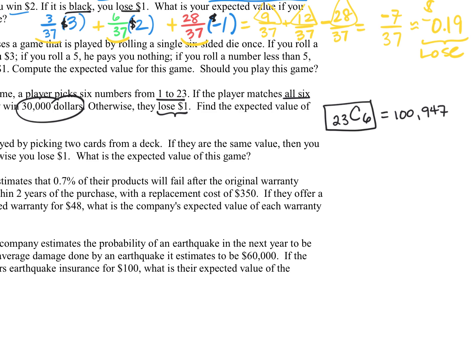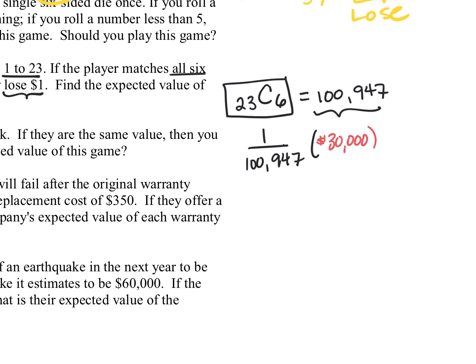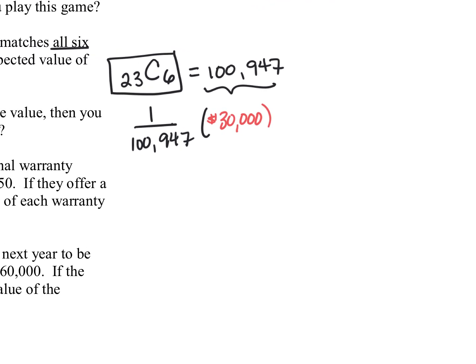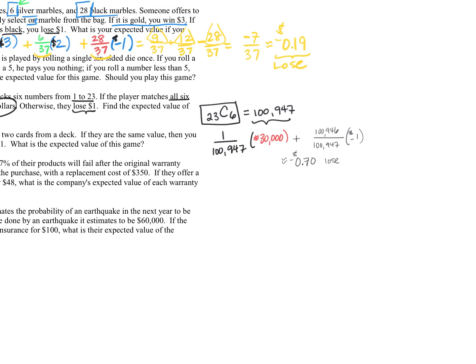We want to have all 6 numbers, so that's going to be 1 out of that amount. So we have 1 out of 100,947, and that's what's going to get us that $30,000. Now if only one of those is the winner, that means the rest are losers. So we're going to write 100,946, that's how many ways you would lose. When we lose, we lose $1. When we combine that together, it ends up being about negative $0.70. So that means we're going to be losing $0.70, and that's the expected value.